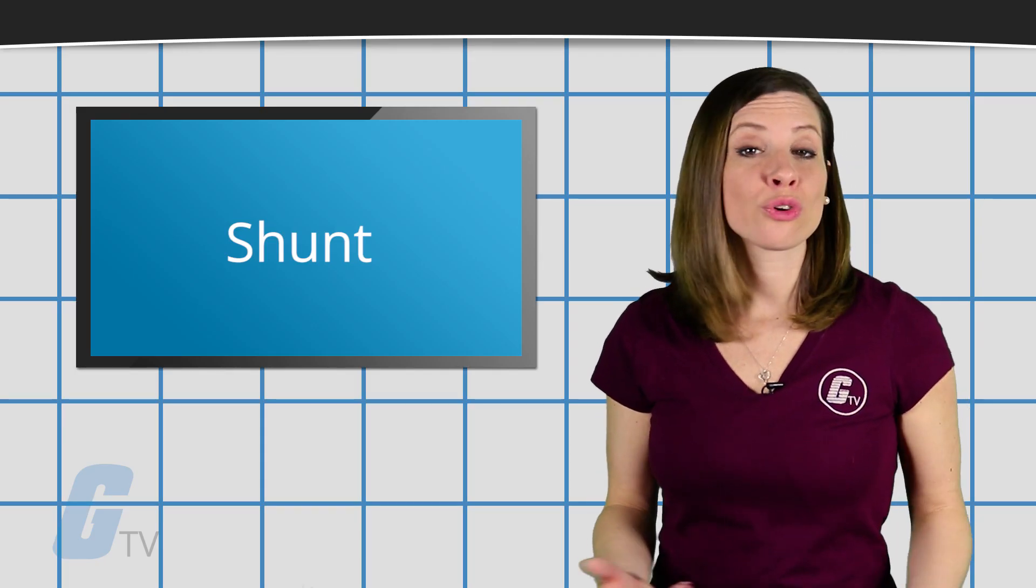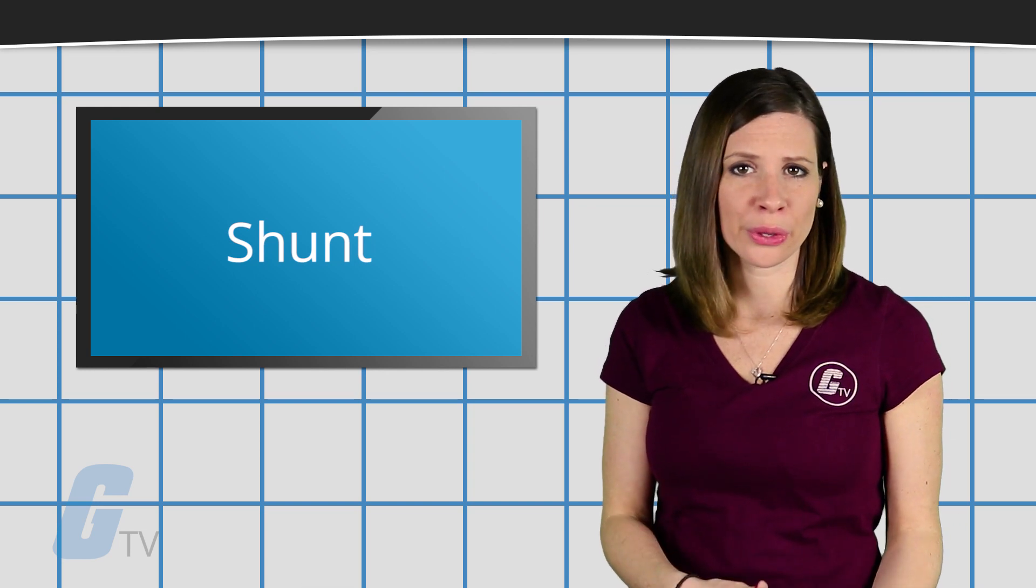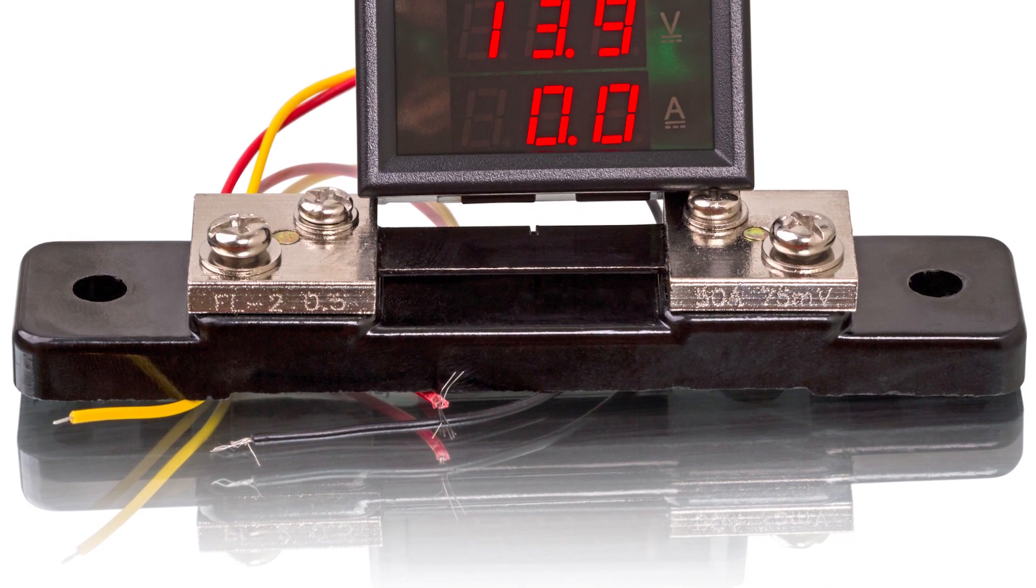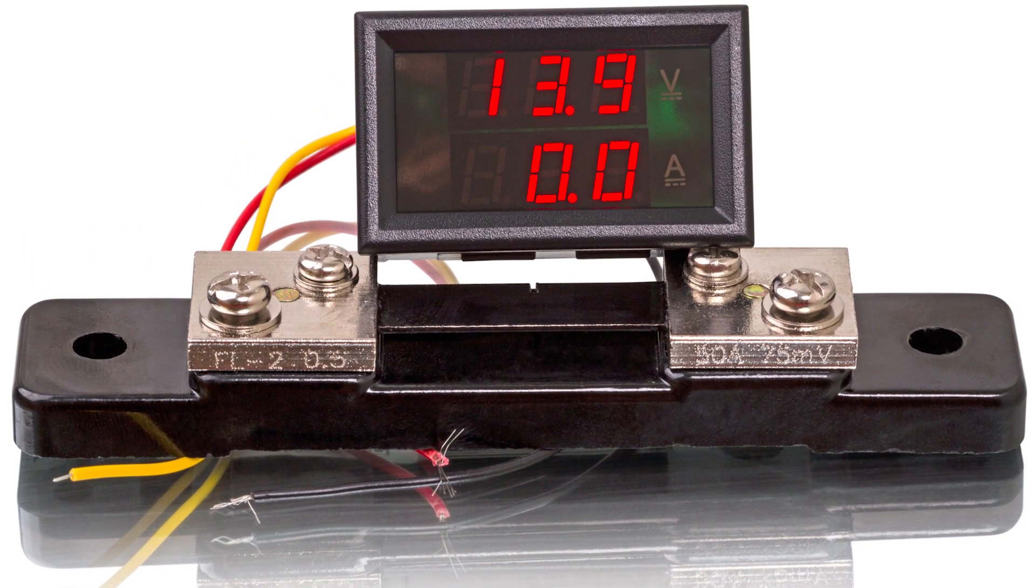The voltage drop across the shunt is proportional to the current flowing through, and with the resistance known, an instrumentation device such as a panel meter can give an accurate reading in volts or current.